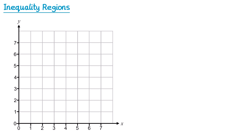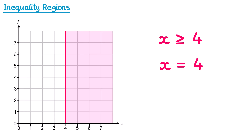Let's try one more: x is greater than or equal to 4. We need to draw the line x = 4, which is a vertical line through 4 on the x-axis. Since we want x to be greater than or equal to 4, we're interested in all points to the right of this line — where x could be 5, 6, 7, and so on. So we shade to the right and label it R.